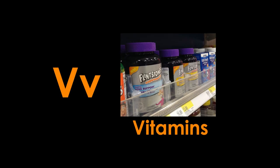V is for vitamins. Vitamins are something our bodies need to be healthy and grow strong. They're in the food we eat and even in the sunshine coming through the windows. Sometimes we need more vitamins than we get in our food and we're able to buy bottles of vitamin supplements like the ones in this picture. We can thank a Kansan, Elmer McCollum, for the discovery of vitamins A, B, D, and E.